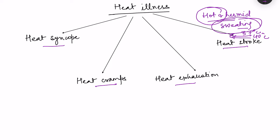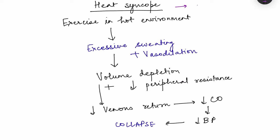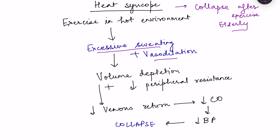The mildest heat illness is heat syncope. Heat syncope is basically collapse after exercise, and it can also occur in elderly people because they are prone to volume depletion. When we exercise in a hot environment, sweating remains the only mechanism for losing heat, so the body causes excessive sweating. There will also be vasodilation, as skin blood flow and muscle blood flow both increase, leading to volume depletion.